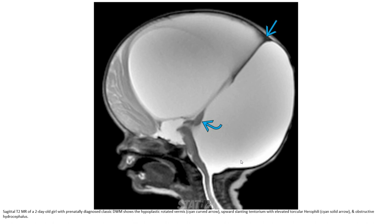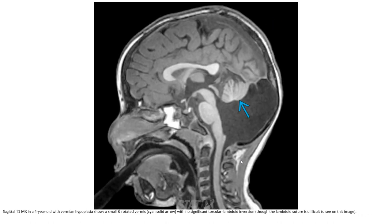This is the first case, where we can see the hypoplastic vermis tilted upward with elevated tegmental vermian angle and obstructive hydrocephalus. This is the sagittal T1 image showing a small vermis with no significant torcular-lambdoid inversion.